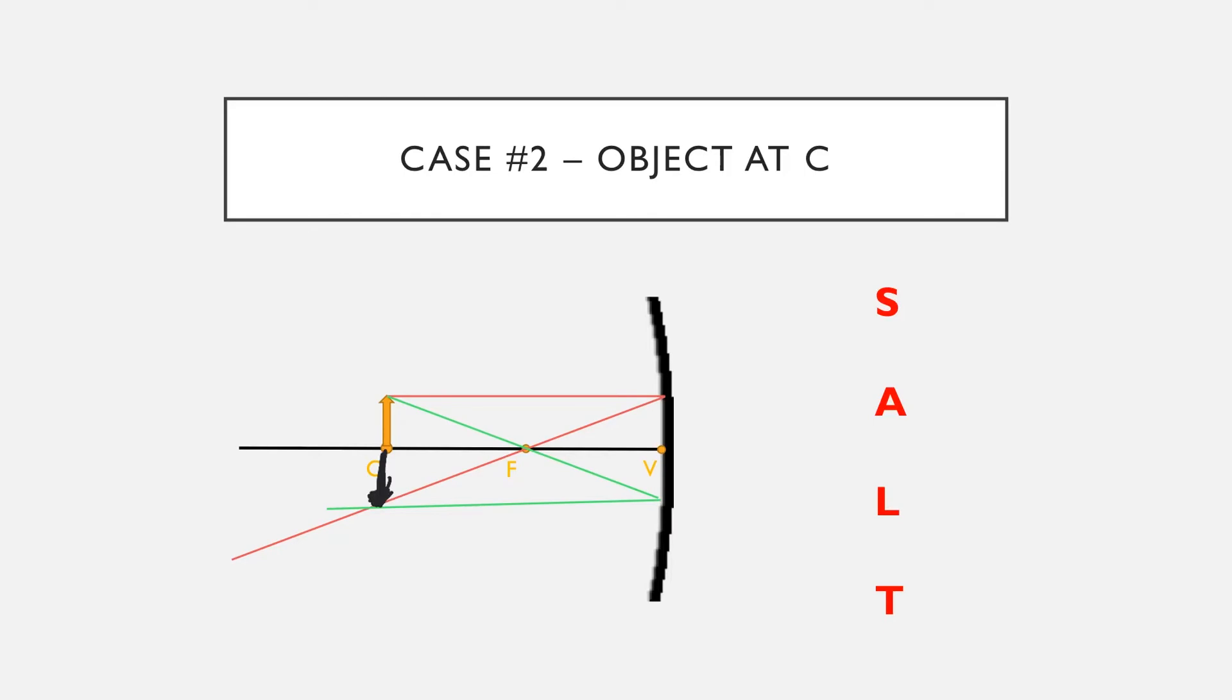The size in this case is going to be the same. The attitude is again inverted because the object is pointing down when the image is pointing up. The location is at C, and the type of image is a real image.